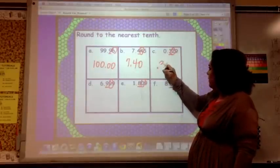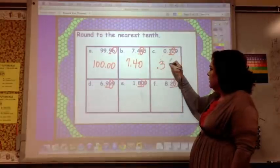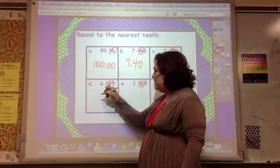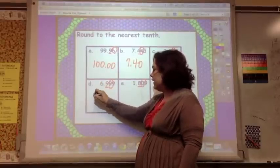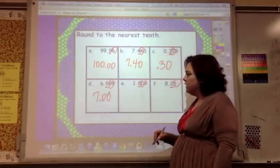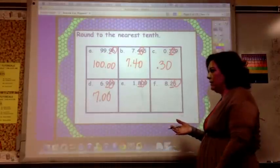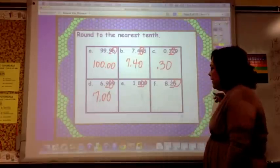And this one, the three, the two says to the three, stay the same. So it stays the same. And this nine tells this nine to go up. Nine can only go up if that goes up. So if you look at this as money, six dollars ninety-nine cents, what are you going to say that is? You're going to say that that's seven dollars. So do these other two by yourself.